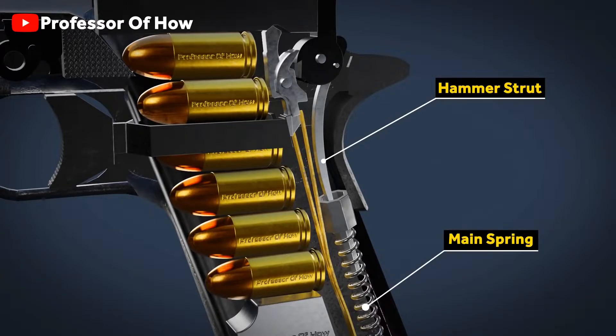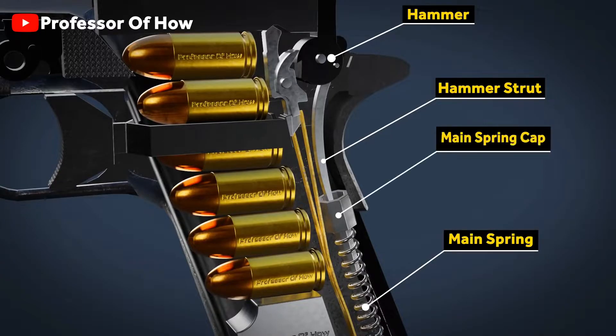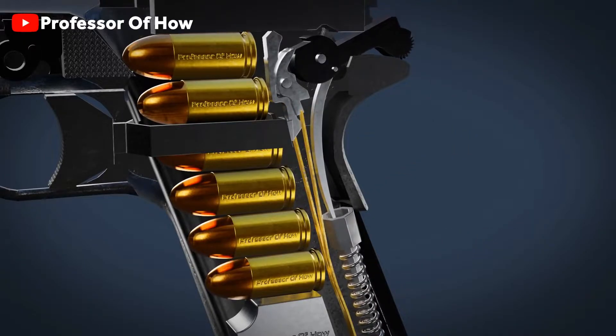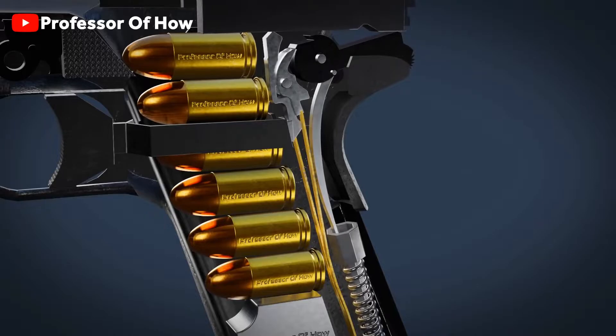Hammer strut on top is connected to hammer, and on the bottom is connected to the main spring cap. Because of slide, hammer strut also starts moving downward as the hammer starts rotating.